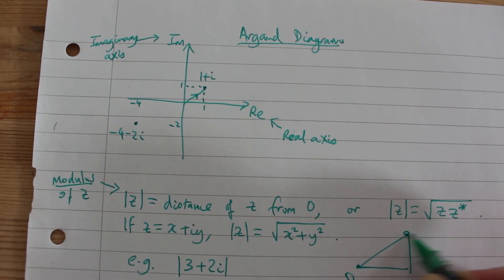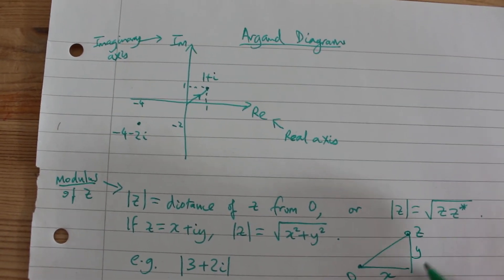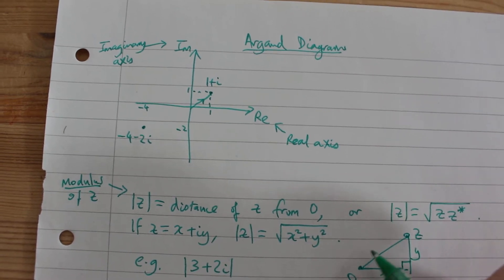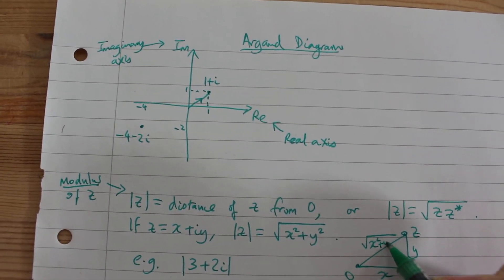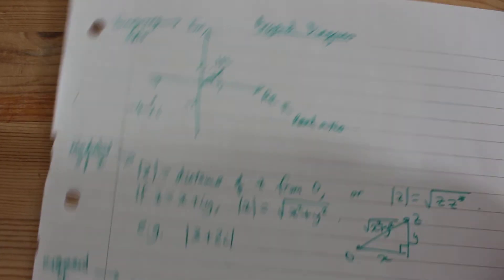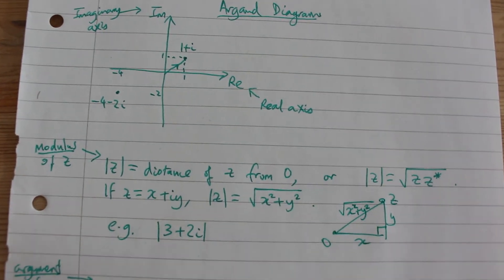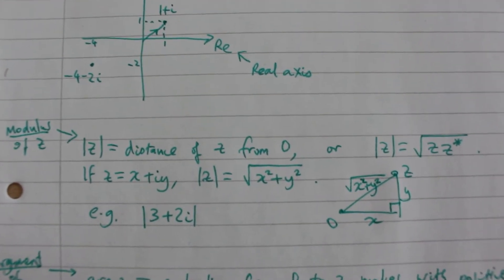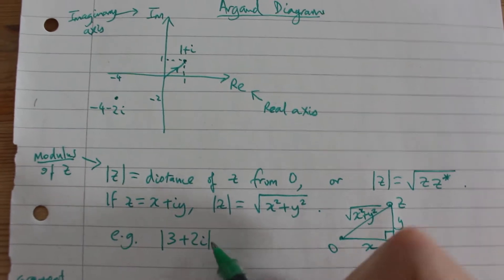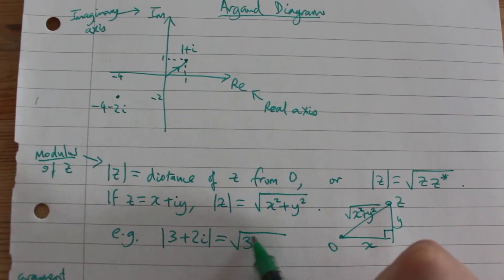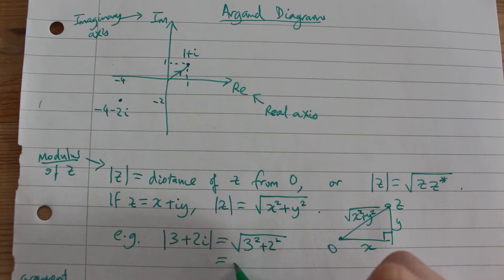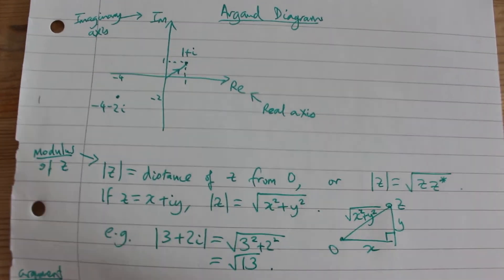If we have 0 and then z, z is x plus iy, then by Pythagoras the diagonal, the hypotenuse of this triangle is given by the square root of x squared plus y squared. So for example the modulus of 3 plus 2i is the root of 3 squared plus 2 squared which is root 13.